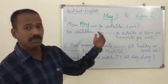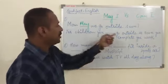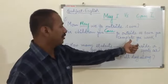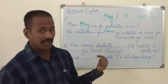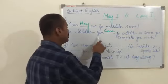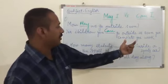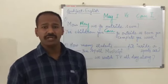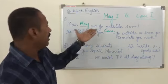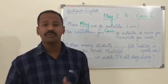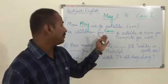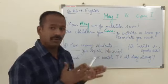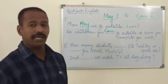Now this is correct. Mom replied: 'Yes children, you can go outside as soon as you complete your work.' Wait — if the question was asked for permission using 'may', then mom's reply giving permission should also use 'may', not 'can'. 'Can' means possibility, and children are certainly capable of going outside. So mom's reply should also use 'may': 'Yes children, you may go outside as soon as you complete your work.'